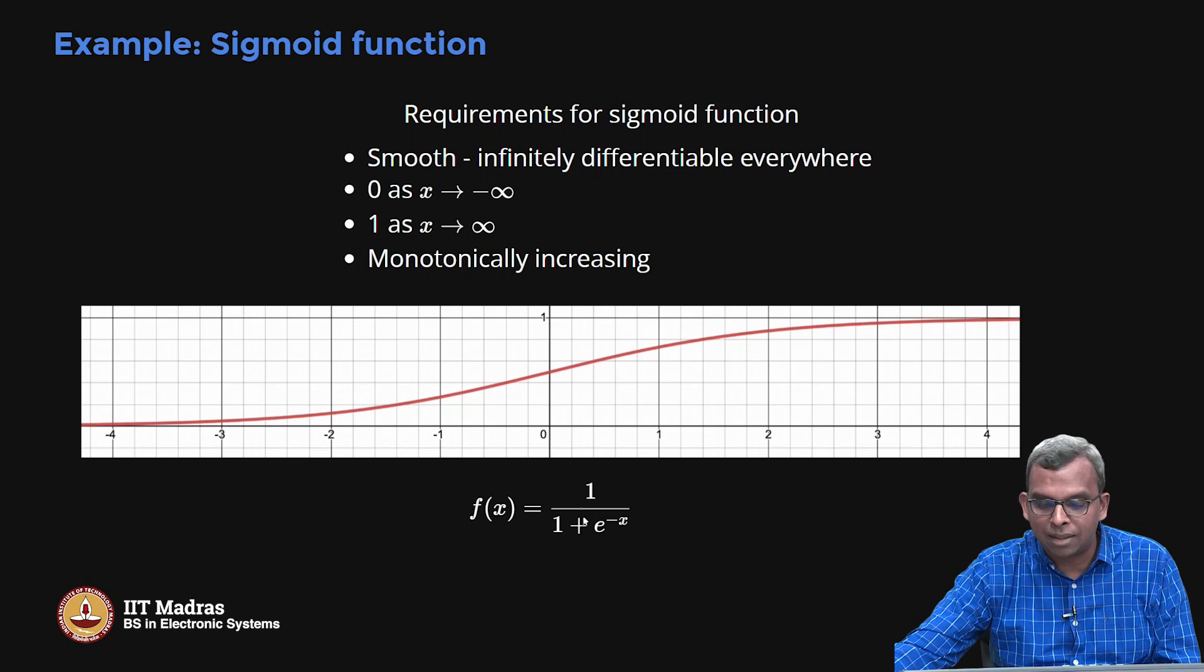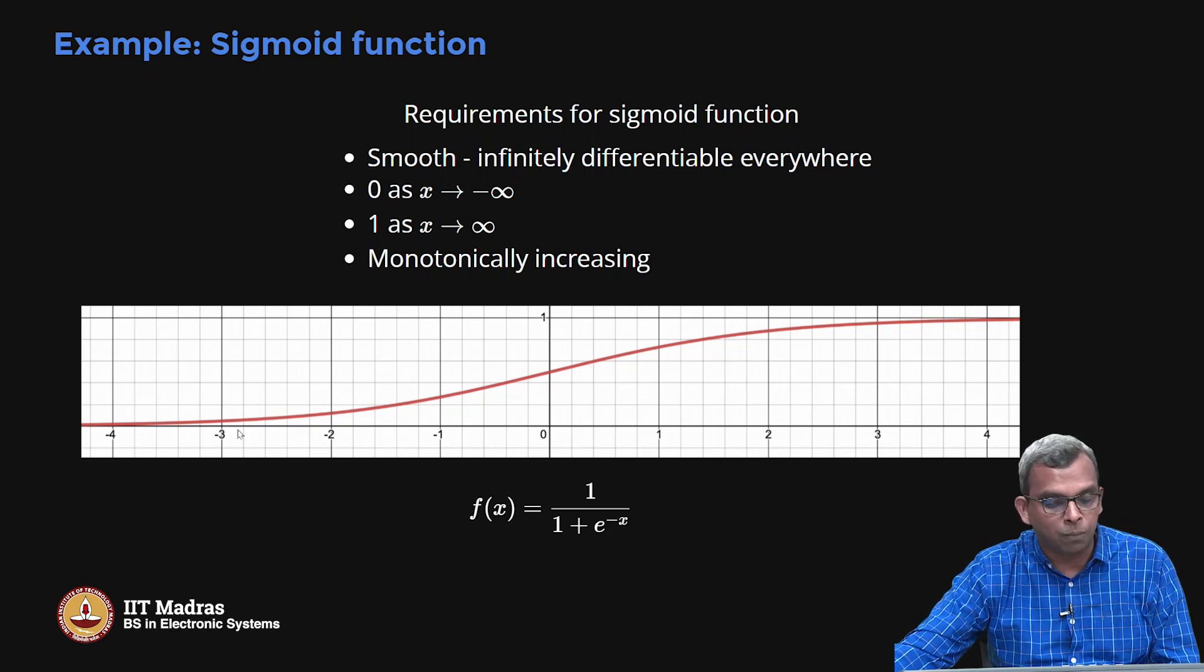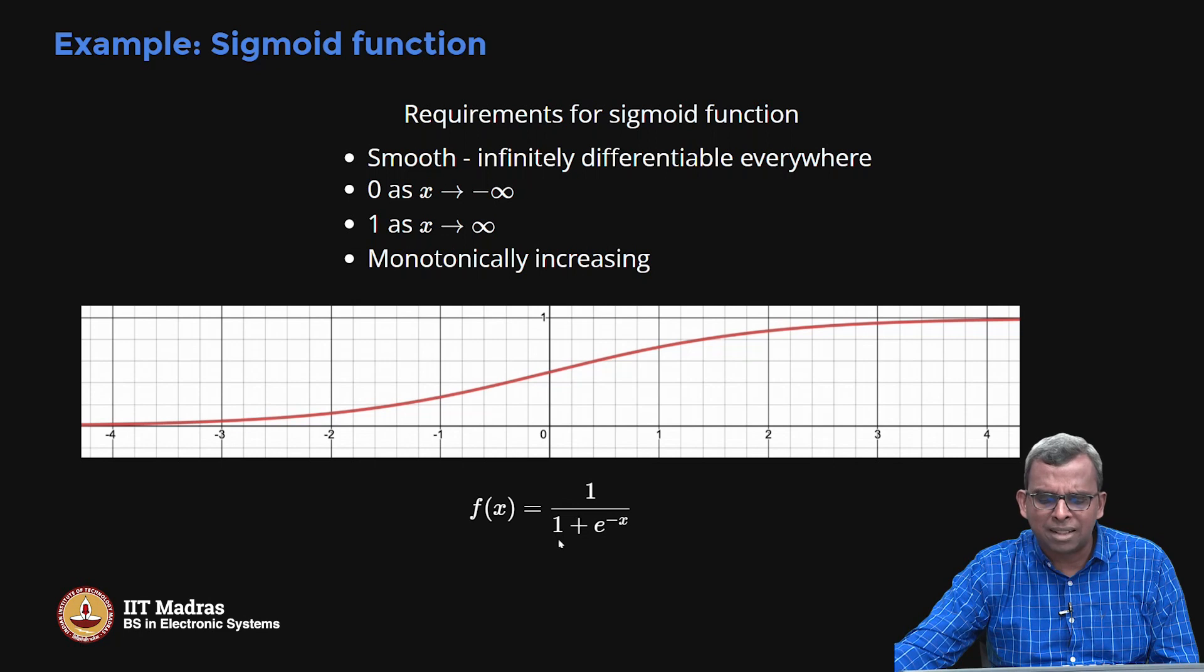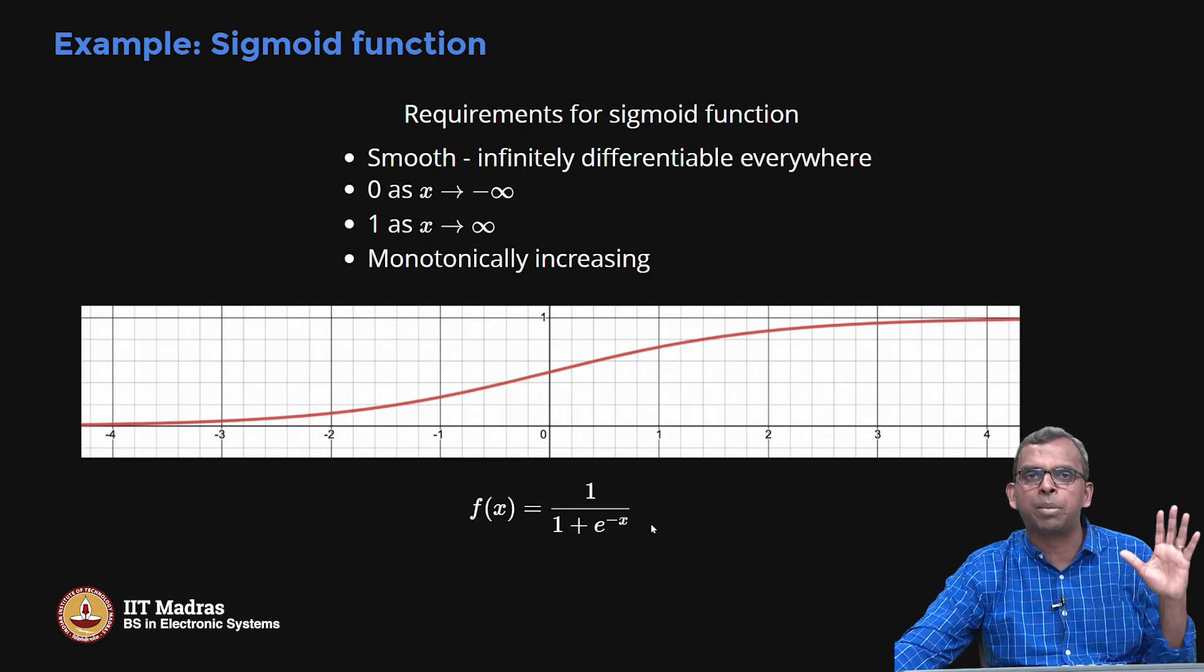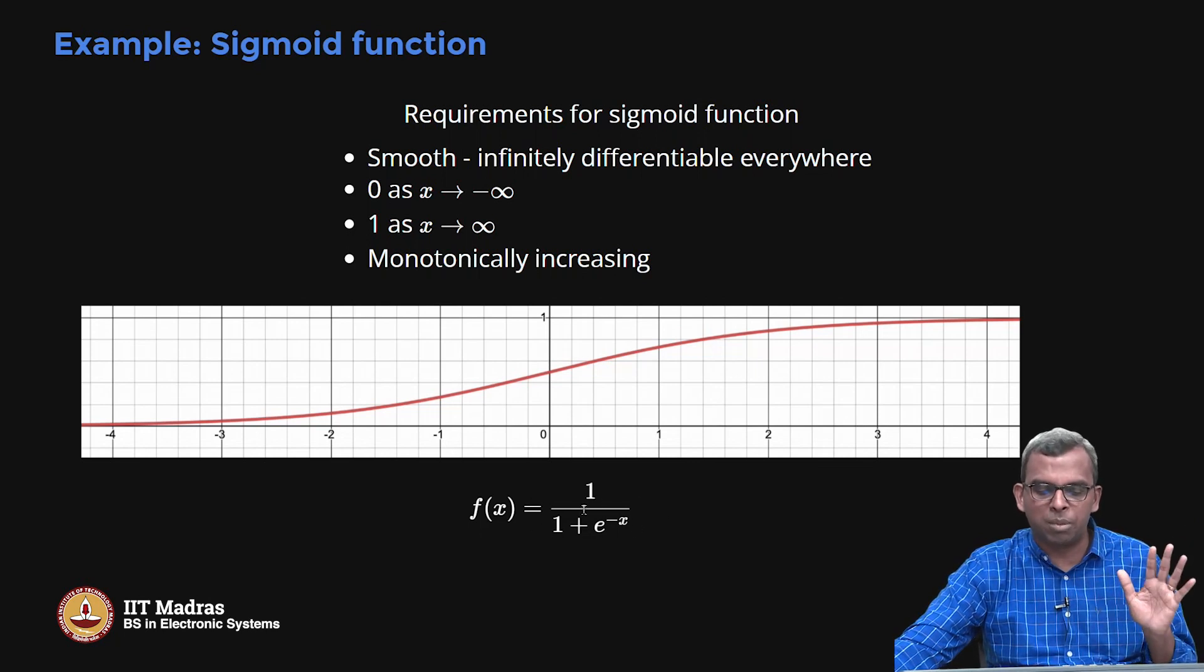Notice what this e power minus x is going to do. So e power minus x is very, very crucial here. Because if x goes very large negative, this e power minus x will blow up. So this whole expression will tend to 0. And because I have e power minus x and 1 by 1 plus, I do not have to worry about being smooth and all that. It is infinitely differentiable everywhere, nowhere it is going to go off to 0. There is no problem here anywhere.